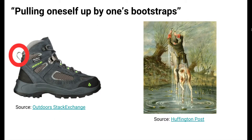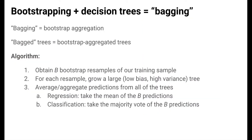You might be wondering where the name bootstrapping comes from. It actually comes from the saying 'pulling oneself up by one's bootstraps' — the idea of trying to get something from nothing. It's actually a butchering of a tale from an old German set of fairy tales about Baron Munchausen, who pulled himself and his horse out of a swamp with his hair, not his bootstraps. In bootstrapping, we try and get a lot out of nothing by resampling our sample. Combining bootstrapping with decision trees is called bagging — bootstrap aggregation or bootstrap aggregating.